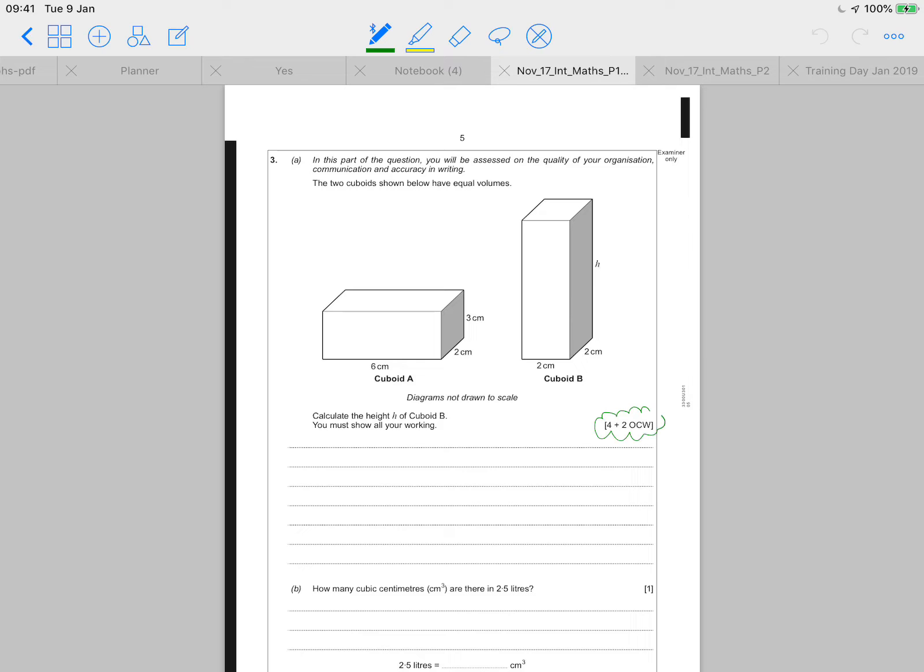So you're going to have two marks for this section A. For your communication, organisation and written work. So I need to make sure that I put units on my answer. I've got to make sure that I actually label any of my calculations. And if possible, if I want to be thorough, I've included the formula as I'm working them out.